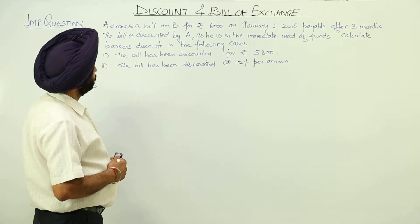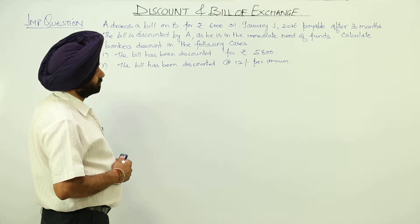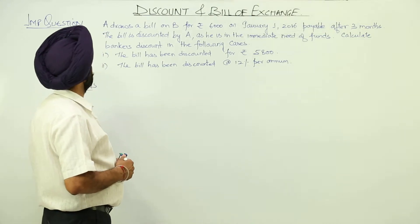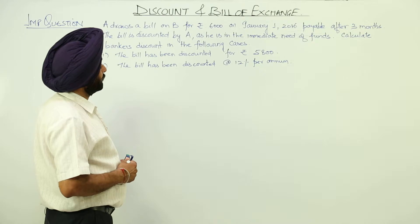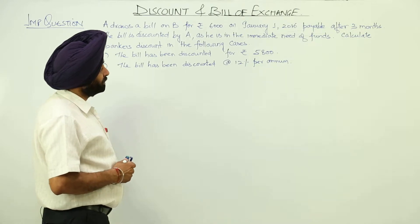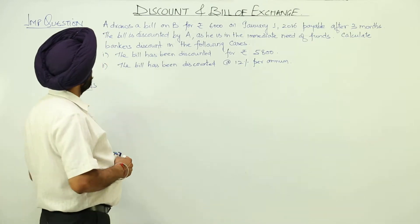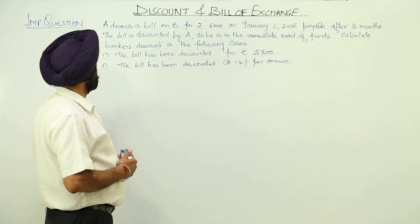A draws a bill on B for Rs. 6000 on January 1, 2016, payable after 3 months. The bill is discounted by A as he is in immediate need of funds. Calculate banker's discount in the following cases.